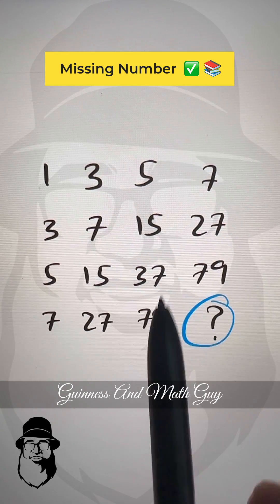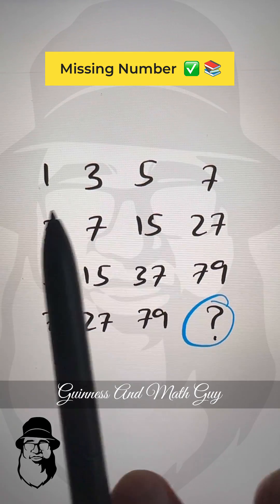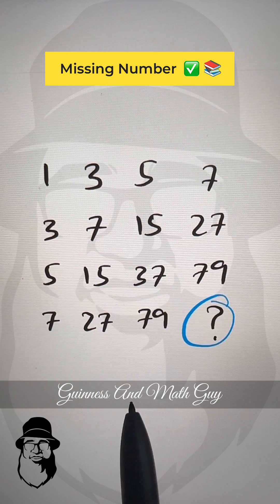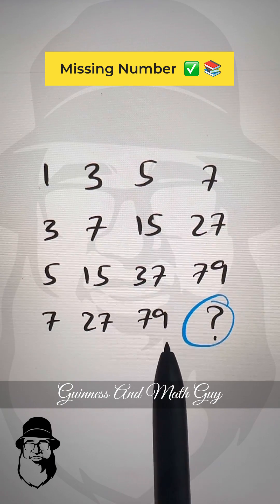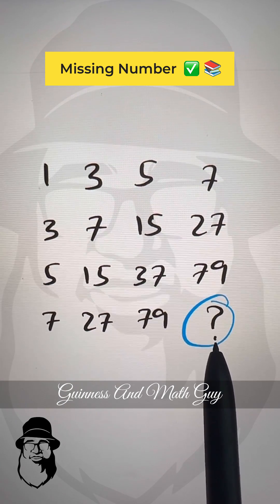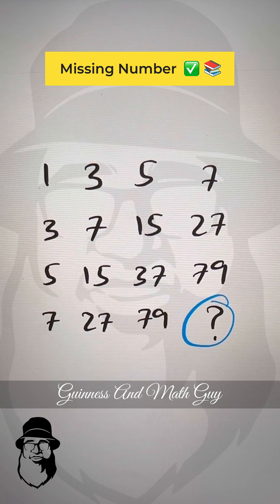Find this missing number from the square of these numbers. Now, pause my video and give me the answer in comments and then I will show you how to do it.